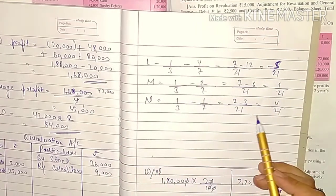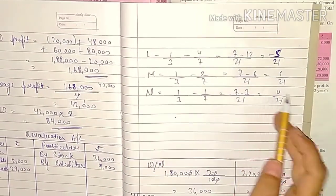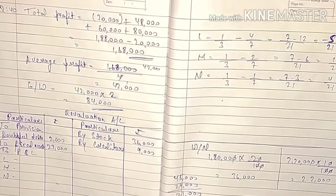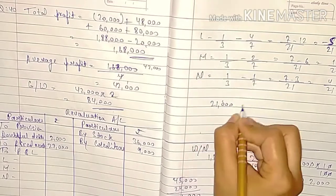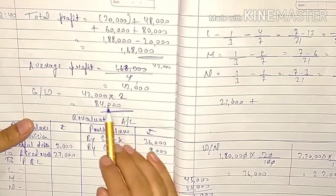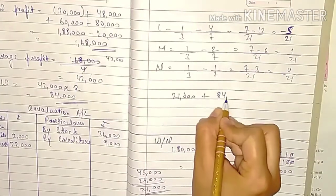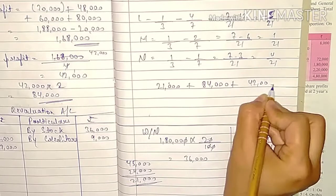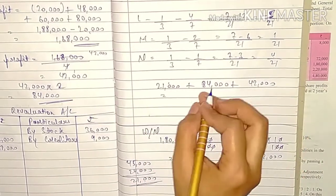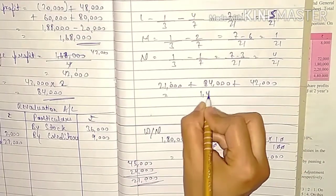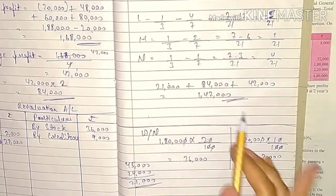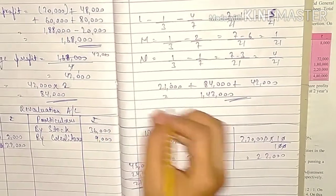All three partners' gaining and sacrificing ratios are now calculated. Now: revaluation profit = 21,000, plus goodwill = 84,000, plus reserve = 42,000. Adding all three: total = 1,47,000. This total will be distributed in the gaining and sacrificing ratio.